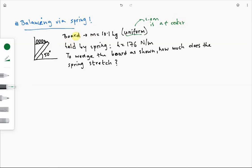Anyways, we have this board of mass 10.1 kilograms, which is uniform, and it is held by a spring as shown. So it is held in position by this spring, making an angle of 50 degrees with the horizontal. So this is a balancing situation.